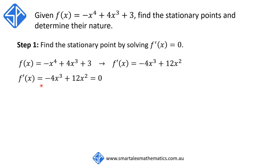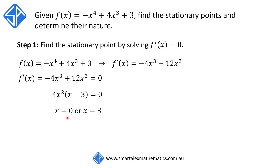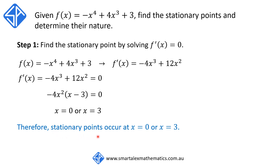We equate f'(x) to 0, so we get -4x³ + 12x² = 0. To solve this, we factorize to get -4x²(x - 3) = 0, and in order for this to be 0, either x = 0 or x = 3. So we have stationary points occurring at x = 0 and x = 3.